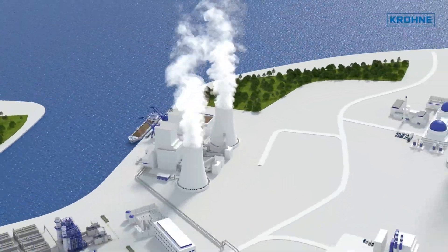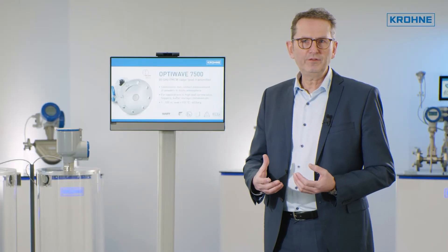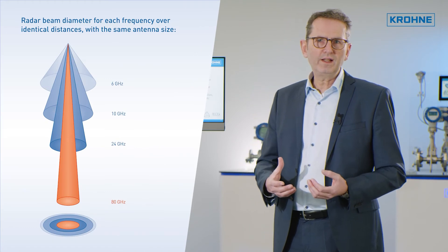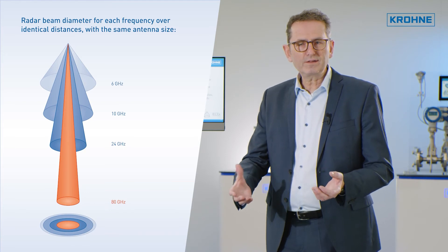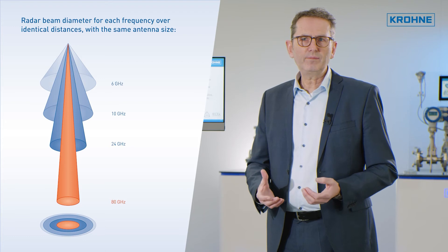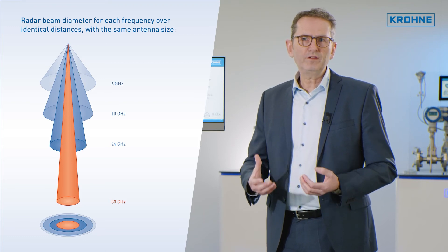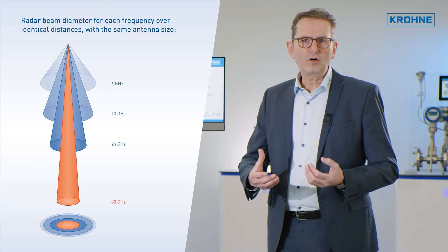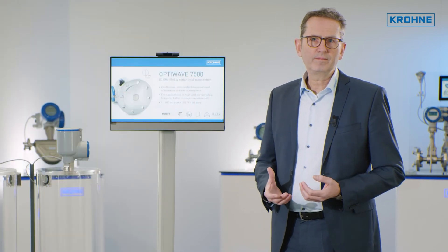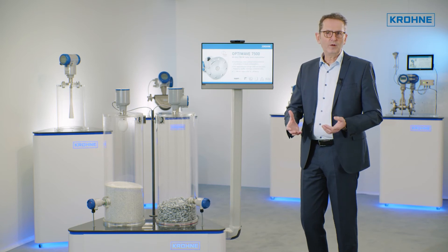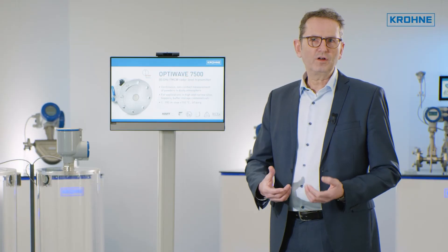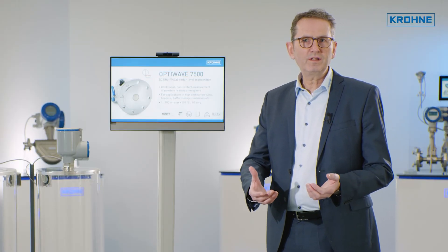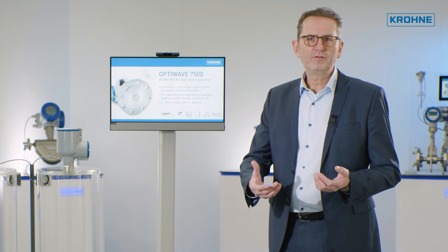The OptiWave 6500 is particularly useful in applications with difficult materials — for example, with low dielectric constants or with high dust content in the gas phase — and delivers stable and reliable results. This means that many level applications can now be achieved that were previously only solved by other mechanical or radiometric measuring devices. Thanks to the clever antenna design of the OptiWave 6500 without metallic horn material, buildup has little chance of interfering with the measurement signal. KRONE offers a complete product portfolio for level measurement based on FMCW radar technology for almost any application.